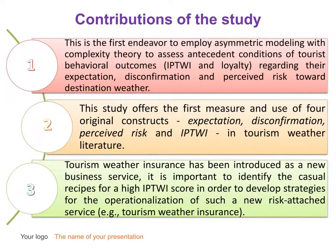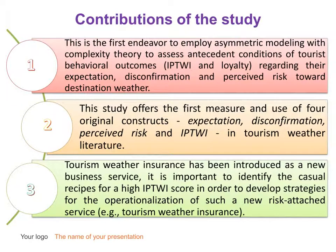We believe that this study is novel for three reasons. Firstly, we employed asymmetric modeling with complexity theory to assess complex interactions of three antecedent conditions with tourist behavioral outcomes in terms of intention to purchase tourism weather insurance and loyalty. Complexity theory with fuzzy set qualitative comparative analysis provides a richer understanding of tourist behavior under risky conditions.